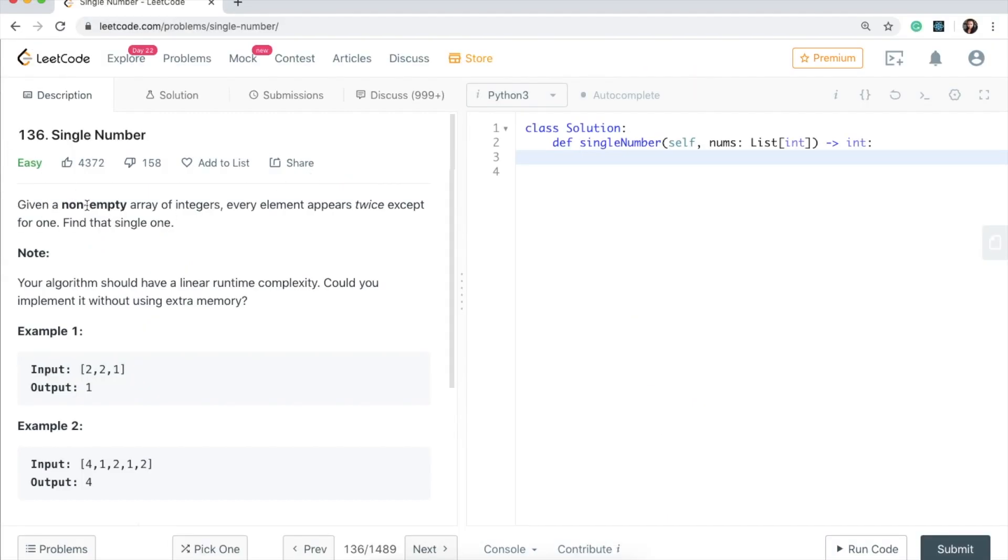So we are given a non-empty list of integers here and every element appears twice except one element that only appears once. So it's pretty easy to understand this question. Here we have two twos and one one and we just need to return the element that appears once. And in this question we have this four and this is the element that we need to return because everything else is in a pair.